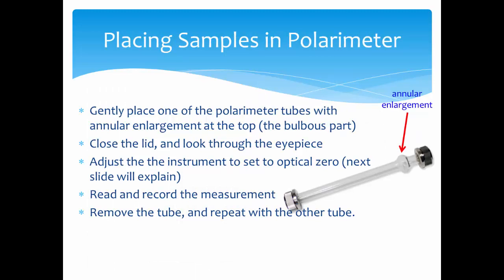To place a sample in the polarimeter, first gently place one of the polarimeter tubes with the annular enlargement at the top, which is the bulbous part. Close the lid and then look through the eyepiece.